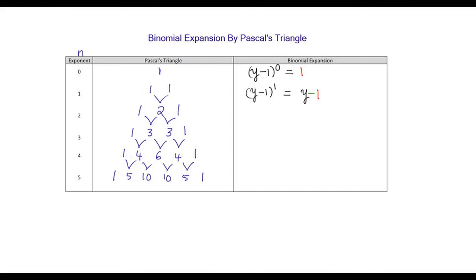(Y minus 1) to the power 1 is equal to Y minus 1, since any number to the power 1 equals itself. First we will start with Y and write the exponent — that is 2 — and go on reducing it by 1: Y^1 and Y^0. We put alternating positive and negative signs, always starting with positive, and use the coefficients from Pascal's triangle: 1, 2, and 1.